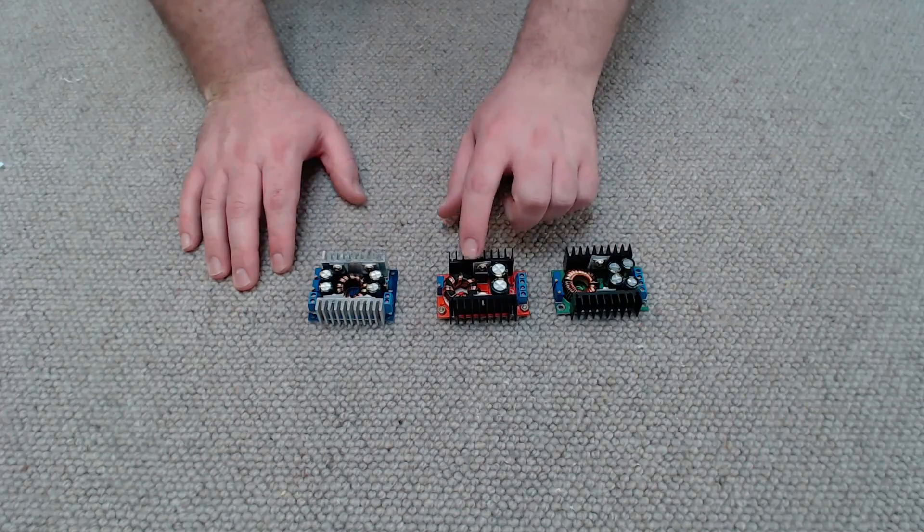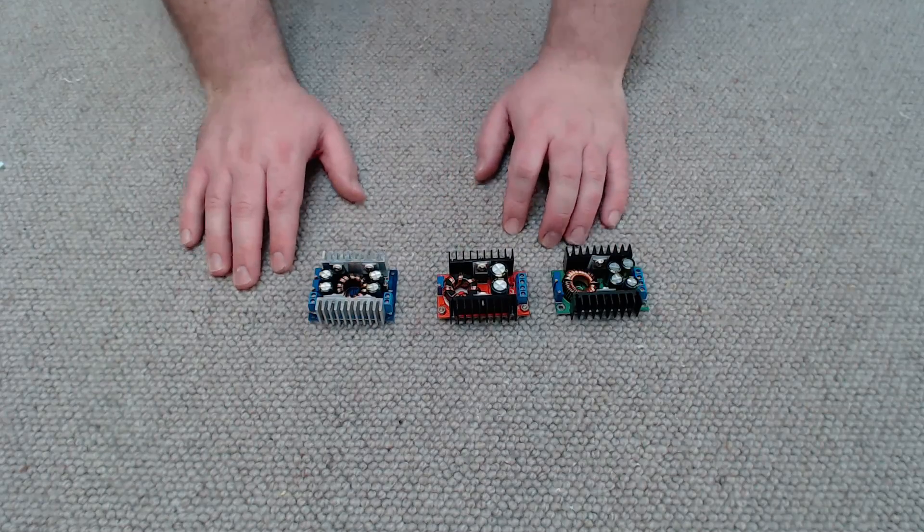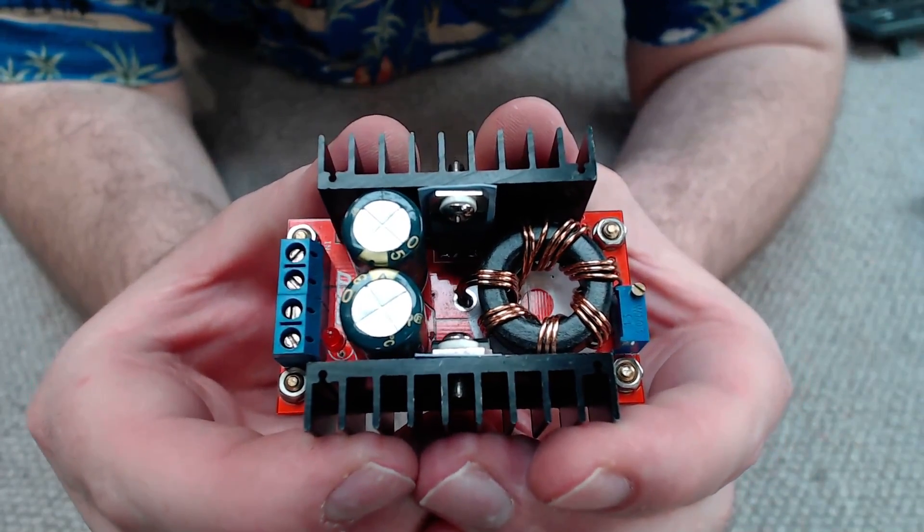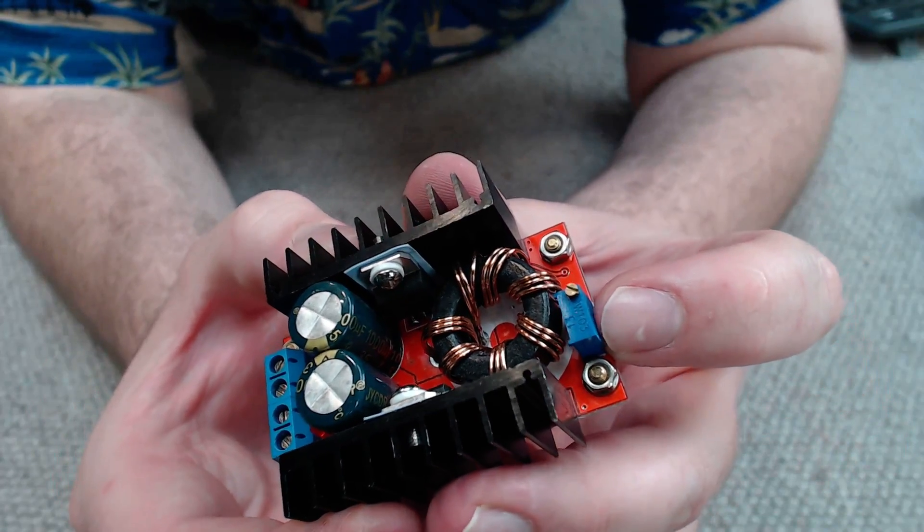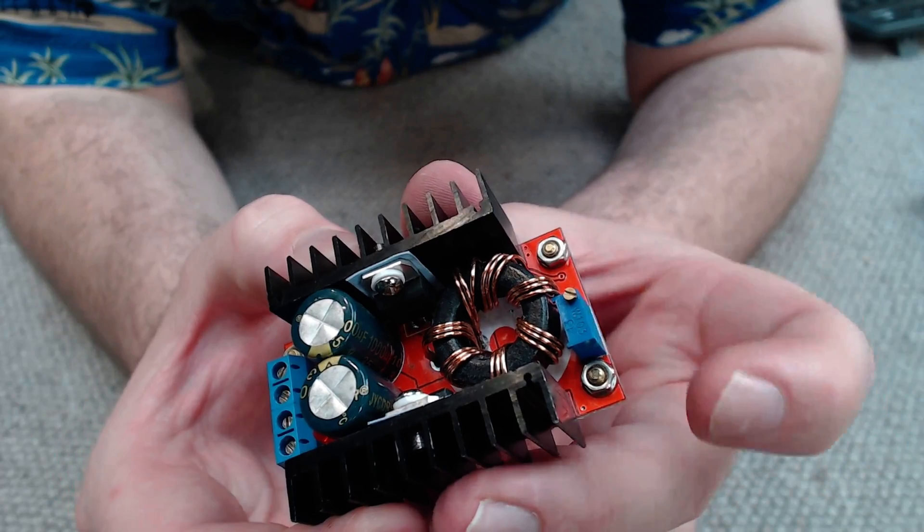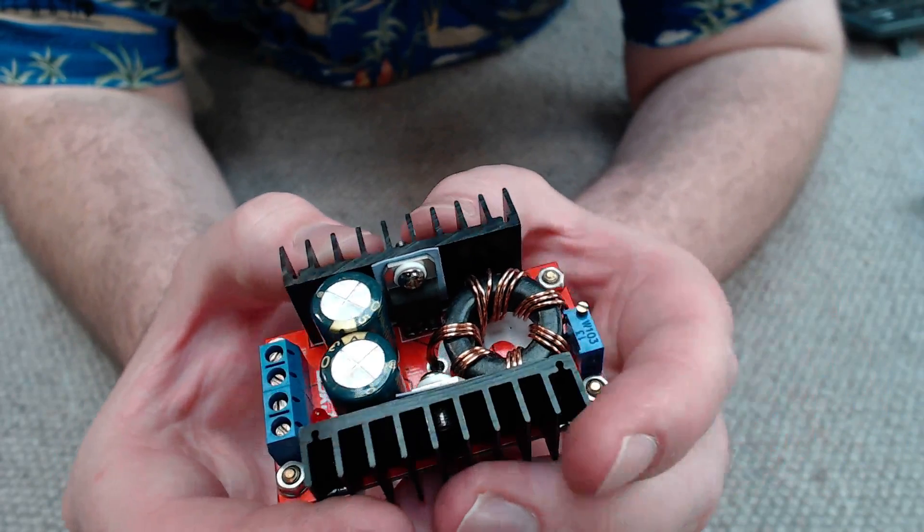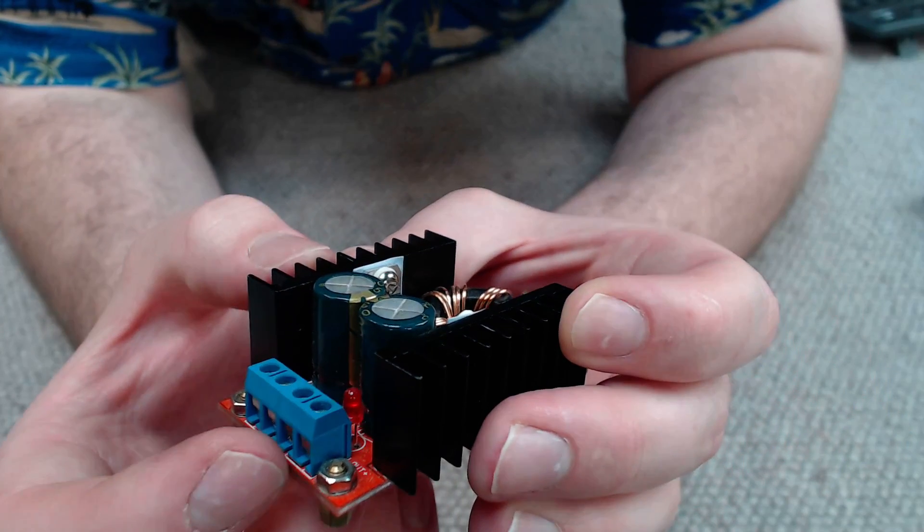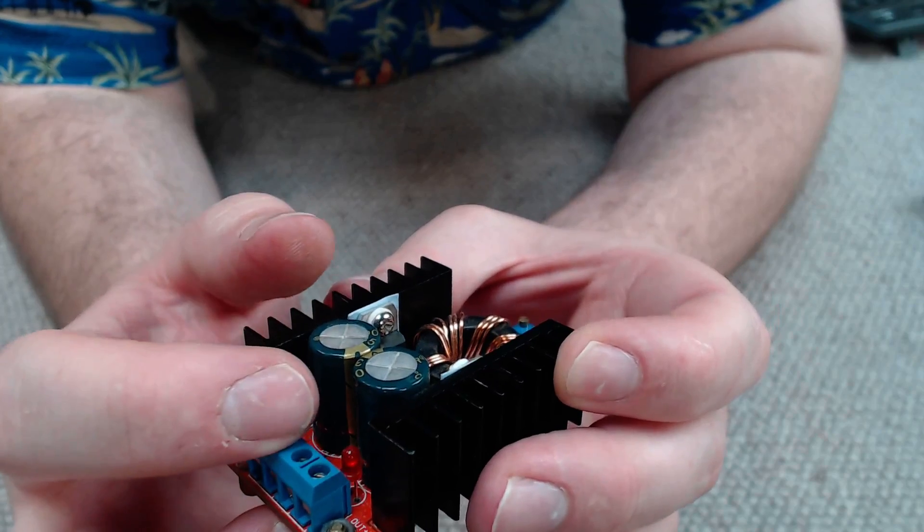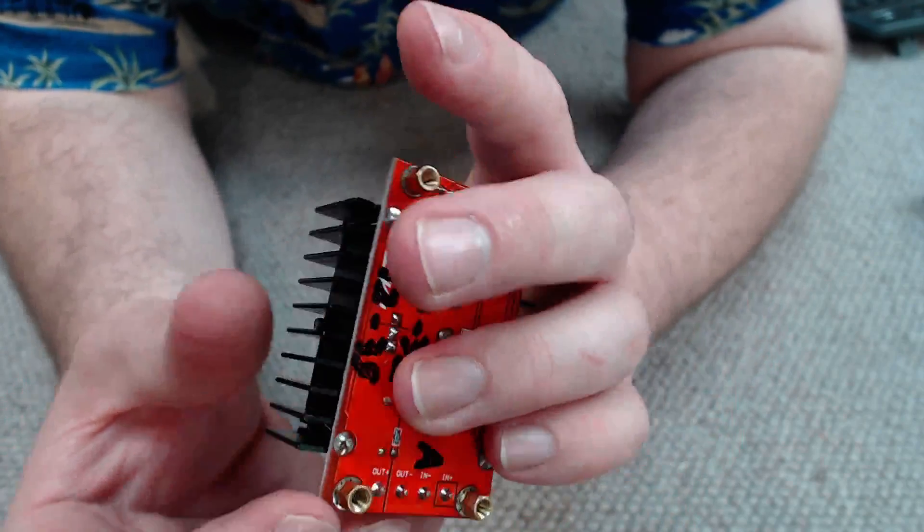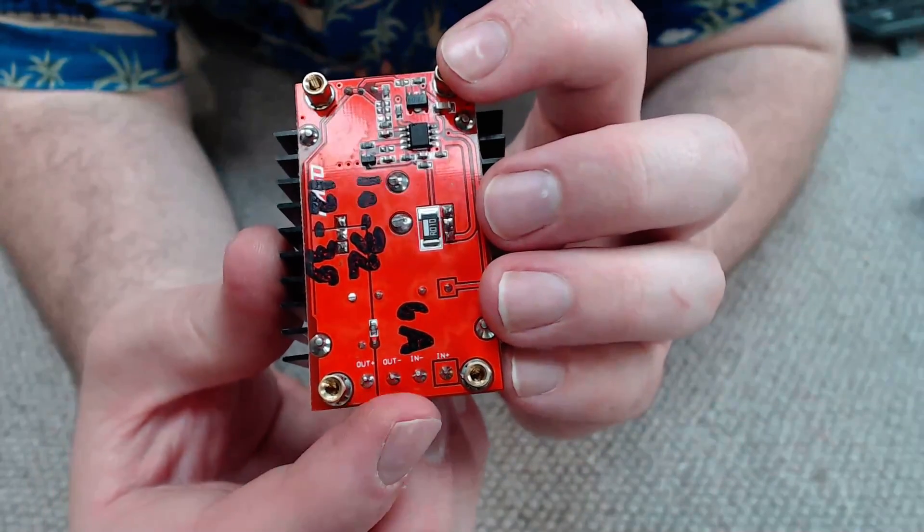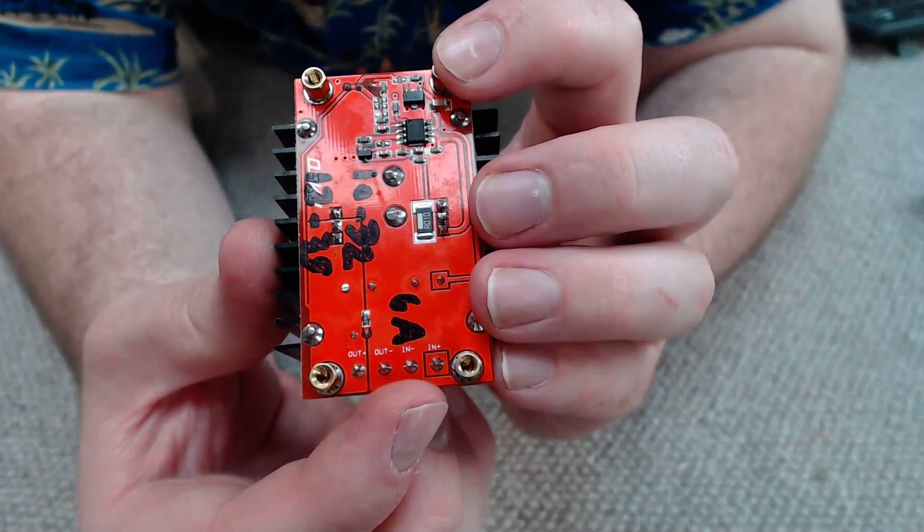Now first we're going to have a look at the boost converter. On one end we have a blue trim pot with a screw on the top. This is used for adjusting the output voltage. And on the other end we have our screw down terminal headers. There's an LED down there to indicate when the unit is running. And on the underside we have our terminal headers and they are marked input and output positive and negative respectively.